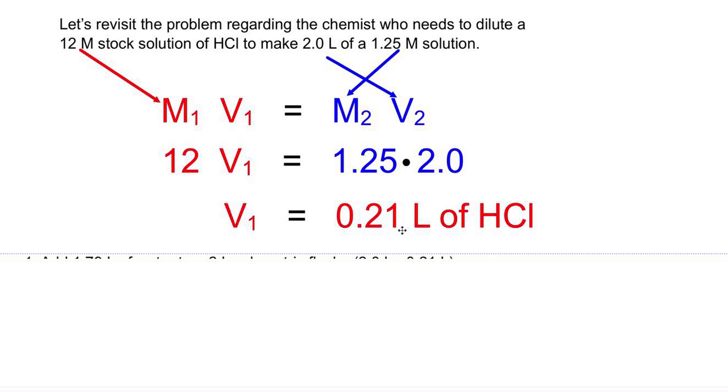So basically we're going to start with this, 0.21 liters. We're going to add enough water to bring the final volume up to 2 liters.